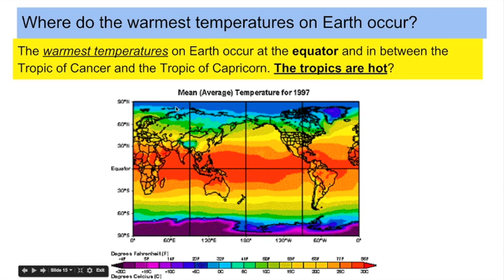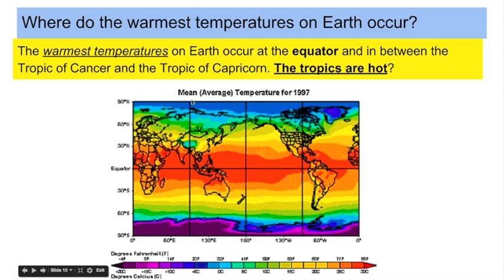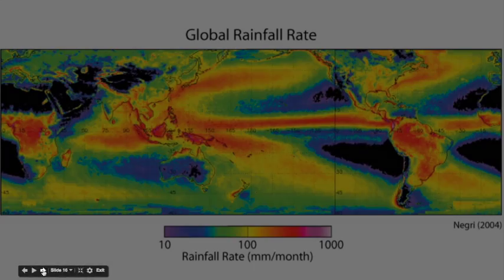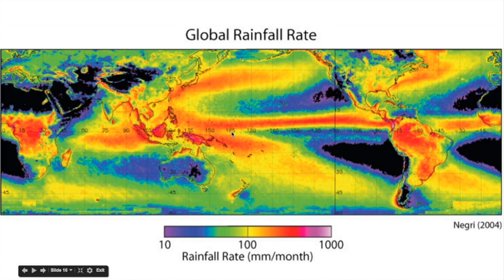Where do the warmest temperatures on Earth occur? The warmest temperatures occur at the equator and in between the Tropic of Cancer and the Tropic of Capricorn. The tropics are hot — lots of sun striking the Earth directly, warming the surface significantly and causing air to rise. When hot, moist air rises quickly into the atmosphere, it cools quickly, and that's when you get thunderstorms and lots of precipitation. The mean average temperature between the tropics causes significant updrafts of hot air, bringing precipitation. Global rainfall correlates with this temperature map — red and purple areas show significant rainfall concentrated at the equator and between the tropics.